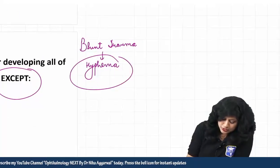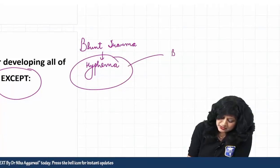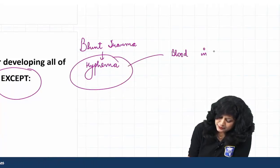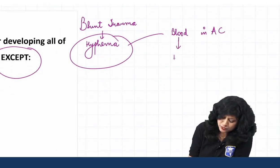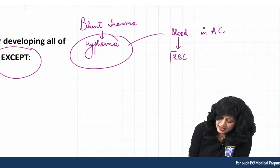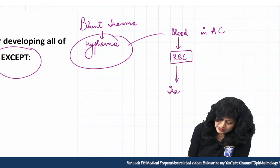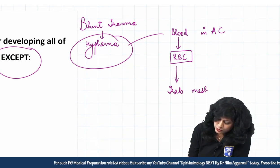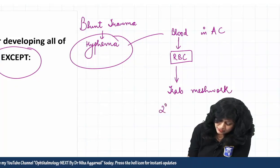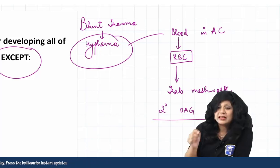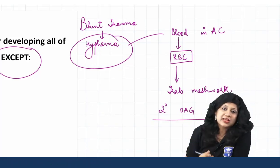Let's talk about the types of glaucoma that can occur. With hyphema — blood in the anterior chamber — the blood consists of RBCs, and these RBCs can go and block the trabecular meshwork. So we can get secondary open angle glaucoma. One kind of glaucoma that can occur is by the blockade of these RBCs.